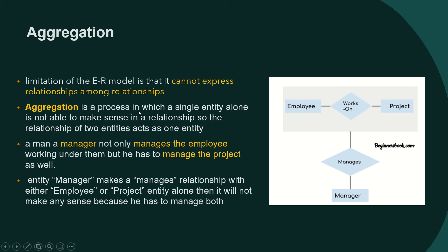Aggregation is a process in which a single entity alone is not able to make sense in a relationship. The relationship of two entities acts as one entity. It will be difficult to understand this definition, so I will explain it with the help of an example.